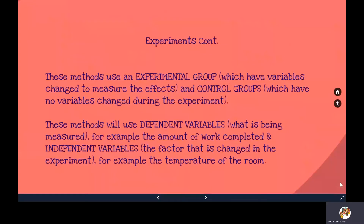Using experiments, we use an experimental group — the group we test and observe how changing variables impacts them. We also use a control group where no variables are changed, allowing us to see how things carry on as normal, so we can identify the changes and the effects they have.